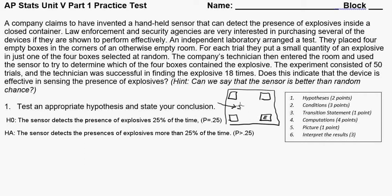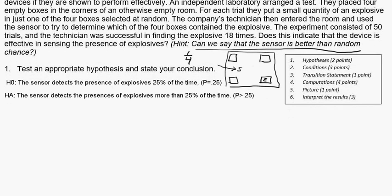The question is, how do you write the hypotheses? We want to see if there was success — if the sensor works better than just random chance. If we walked into the room and just guessed, the probability of getting it right would be one out of four, or 25%. The null hypothesis is that the sensor detects the presence of explosives 25% of the time. The alternative is that the sensor detects explosives more than 25% of the time — this is what we want to prove.